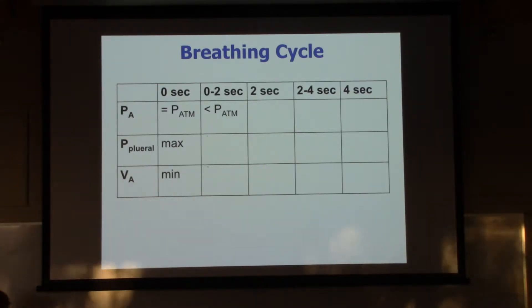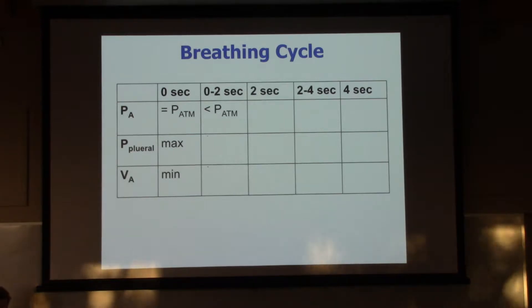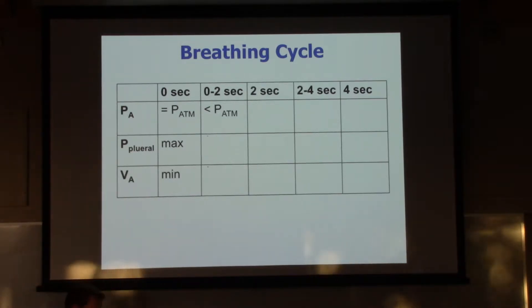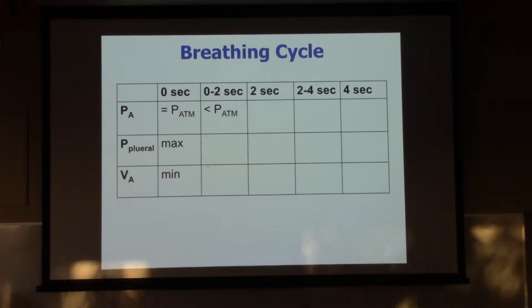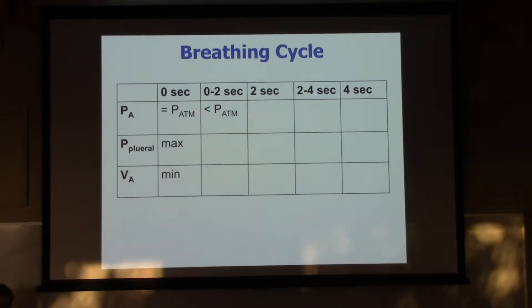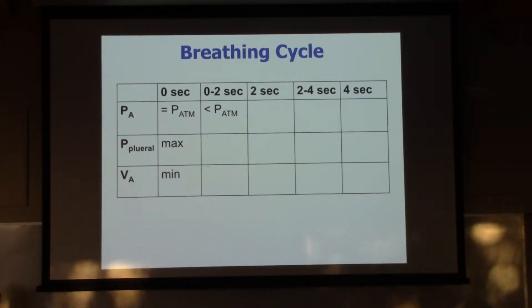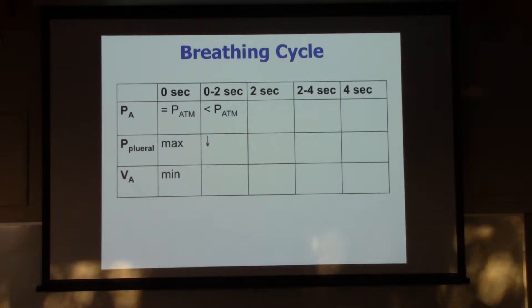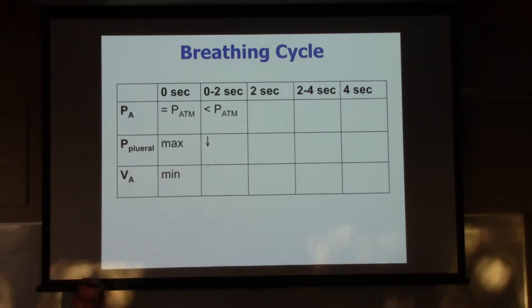But when we did that - when we moved those ribs out - it's pulling the outer layer of the pleura out also. So it's slightly increasing the volume in that space between the two layers. So the pressure in there also goes down. We have a decreasing interpleural pressure as we expand those lungs and pull the walls out.